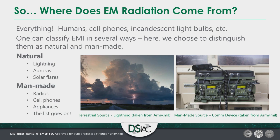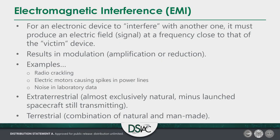For an electronic device to interfere with another, it must be producing an electric field at a signal close to what's being picked up by the victim device. This results in modulation — either amplification or reduction, constructive or destructive interference. Notable examples include a radio crackling in the presence of a lightning strike, electric motors causing spikes in power lines that make lights flicker, or noise in laboratory electronic signals where the signal-to-noise ratio goes to garbage. Another way to break this down is terrestrial versus extraterrestrial.